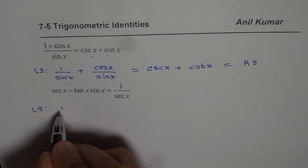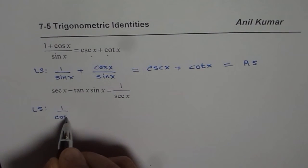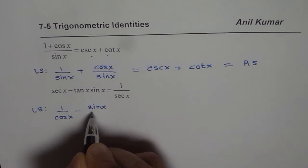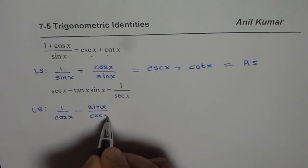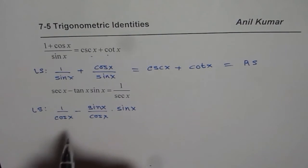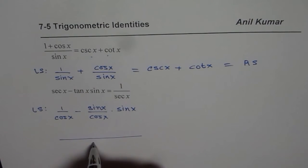So secant is 1 over cos x. Minus tan is sine over cos, sine x over cos x. We have sine x. Now in this case, we can take a common denominator of cos x.